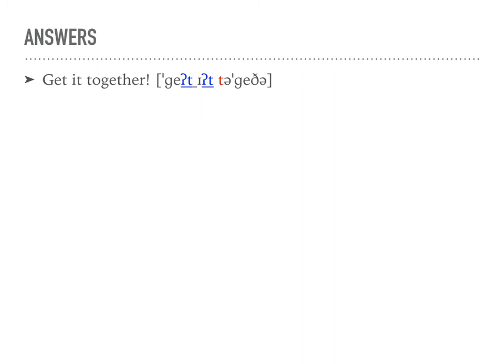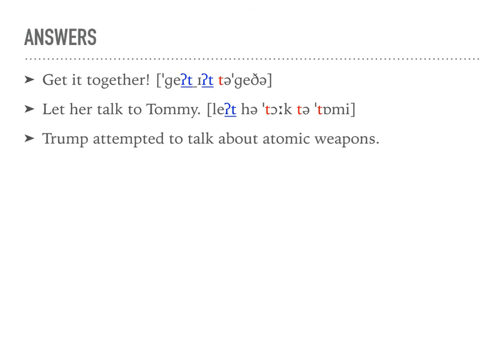Looking at the answers to this activity: in 'get it together', the T in 'get' and the T in 'it' do get glottal reinforcement because they are not starting a stressed syllable and they are not starting a word. In 'let her talk to Tommy', 'let' gets glottal reinforcement. 'Talk', 'to', and 'Tommy' do not because those words all start with the letter T. In 'Trump attempted to talk about atomic weapons', Trump, attempted, to, and talk do not get glottal reinforcement. But in the word 'about', the T does. You can feel it in your throat — when we say 'Trump attempted to talk about atomic weapons', your throat closes at the end. That is the definition of glottal reinforcement.